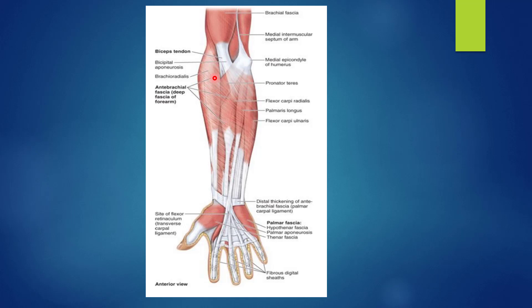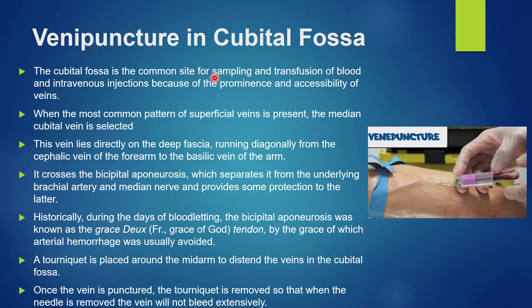For clinical applications, the cubital fossa is the most common site for venipuncture — for taking blood samples, for blood transfusion, and for giving intravenous injections — because of the prominence and accessibility of the veins. The veins here are very prominent.